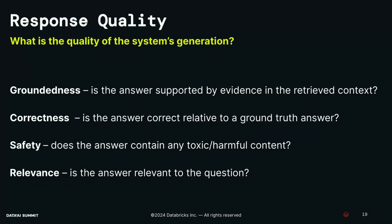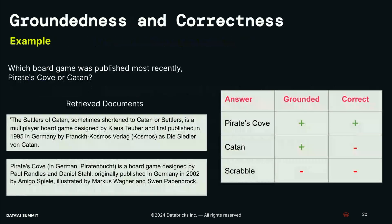Moving up to response quality — the multi-dimensional aspects of whether our generations are actually good. One is groundedness: is the answer supported by evidence in the retrieved context? One is correctness: is the answer correct relative to some ground truth answer? Additionally, many customers care about safety: can the system generate harmful content? And relevance: are the answers truly relevant to the question at hand? For groundedness and correctness, let's look at our board game example with those two retrieved documents that we need.